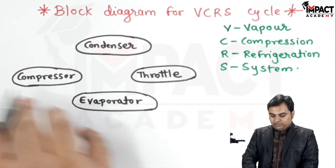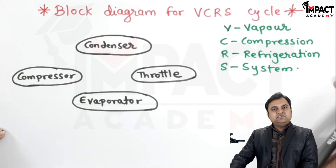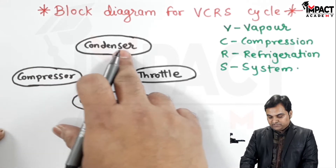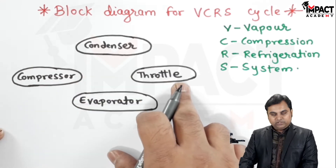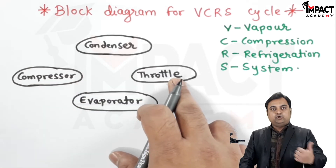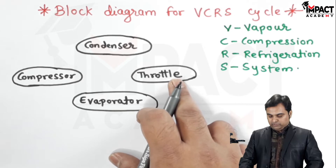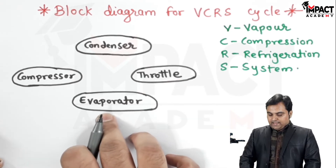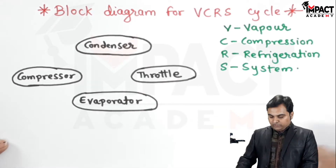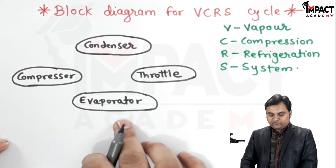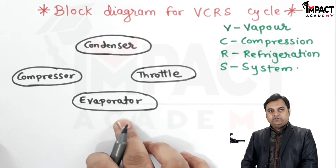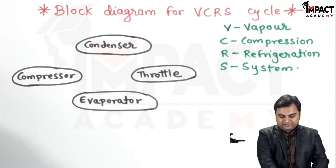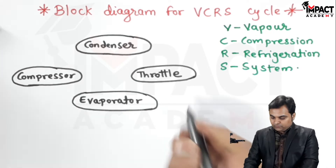In VCRS there are four components: compressor, condenser, throttle valve (also called expansion valve — both are the same), and evaporator. The liquid refrigerant will first enter from the throttle into the evaporator.